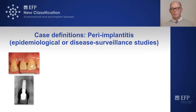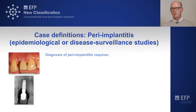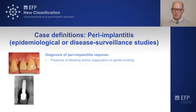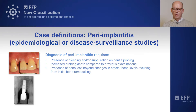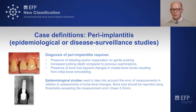When it comes to epidemiology, disease surveillance studies on peri-implantitis, we can basically use the same criteria for day-to-day clinical practice, which were bleeding or suppuration on probing, increased probing depths, or documented bone loss compared to previous documentation. Epidemiological studies should ideally include previous examinations performed after the first year of loading.